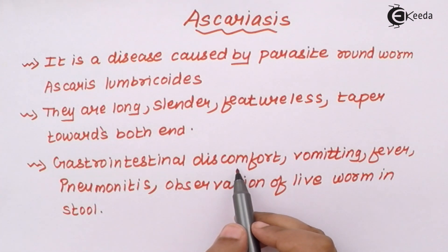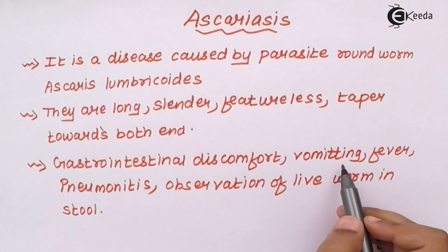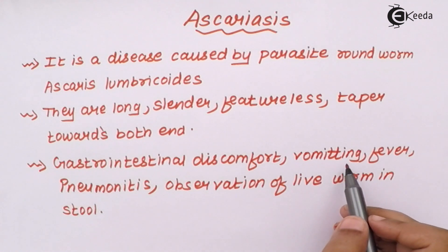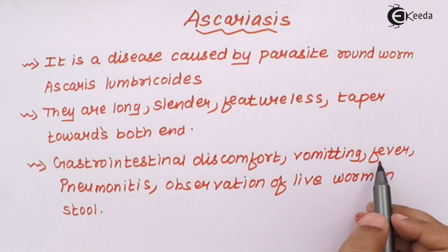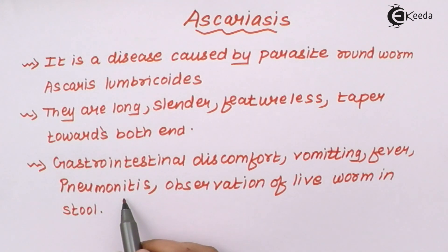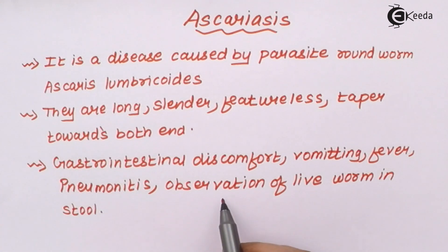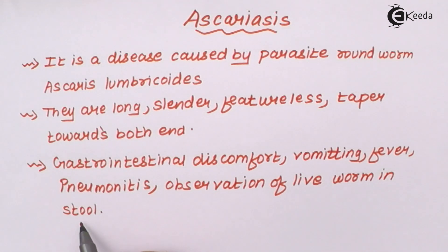Alkalinity is reduced and increased acidity is seen in the stomach. There is vomiting and nausea after consuming and digesting food. Intermittent fevers are seen — the temperature fluctuates from very low to suddenly high. Pneumonitis occurs, meaning the bronchial region or respiratory tract becomes inflamed. Observation of live worms can also be seen in the fecal matter or stool, especially in children.